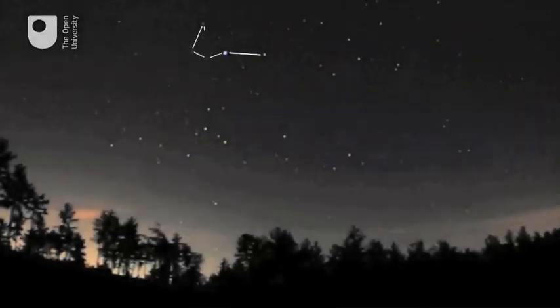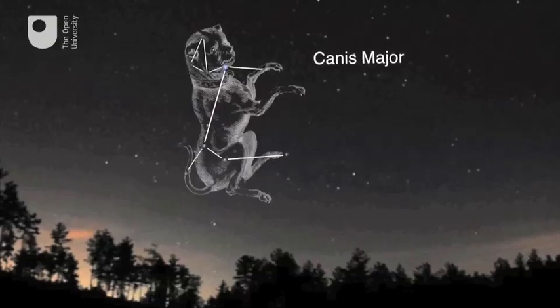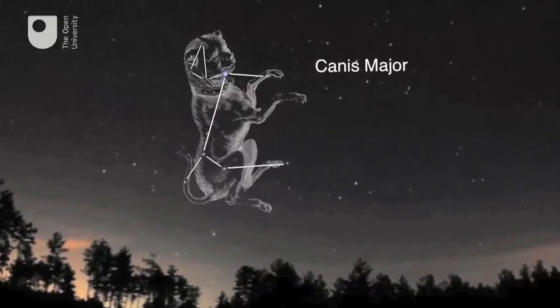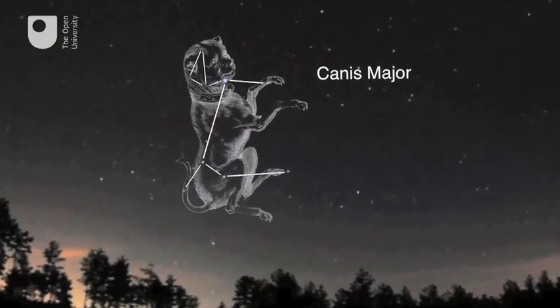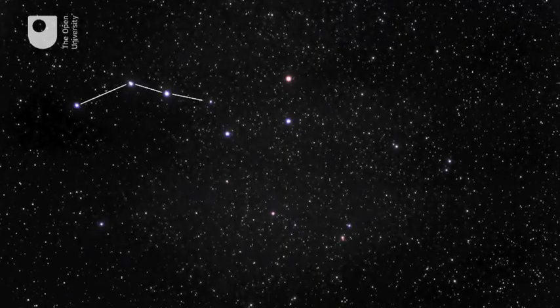The oldest catalogues of constellations come from Babylonian astronomy, beginning in around 1200 BCE. Although some Sumerian names in these catalogues suggest that they build on older traditions.